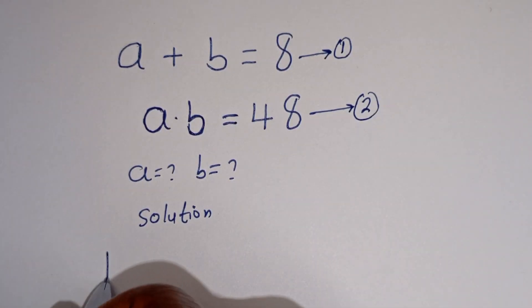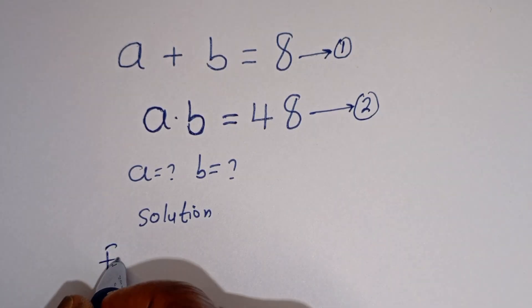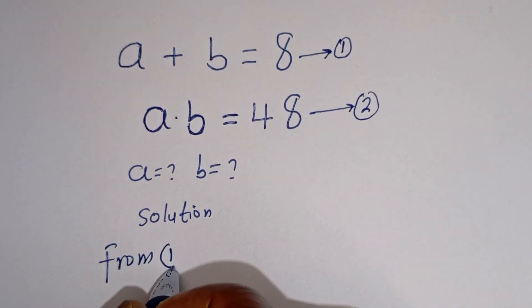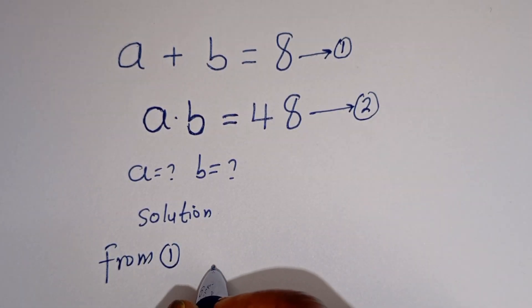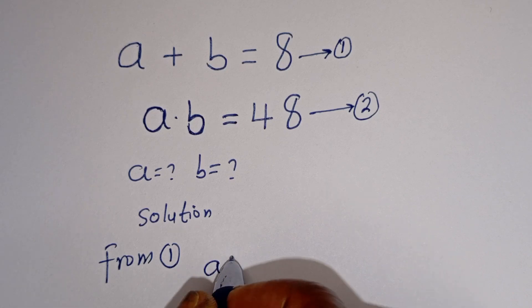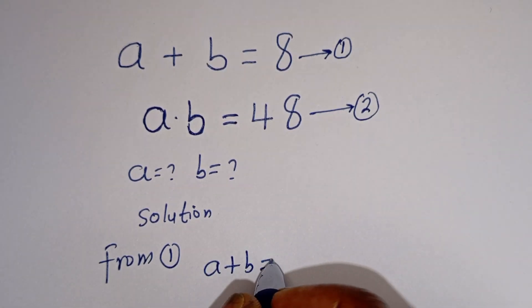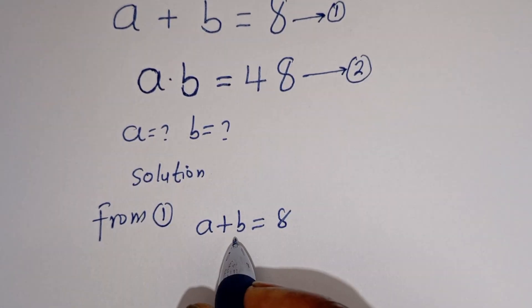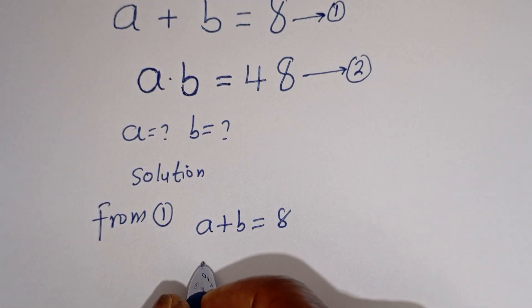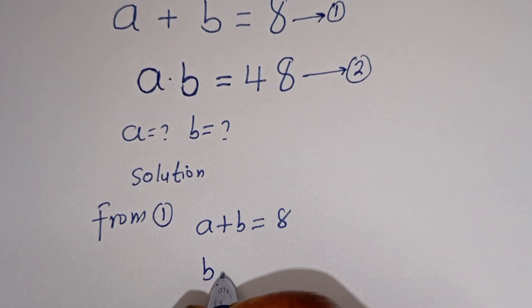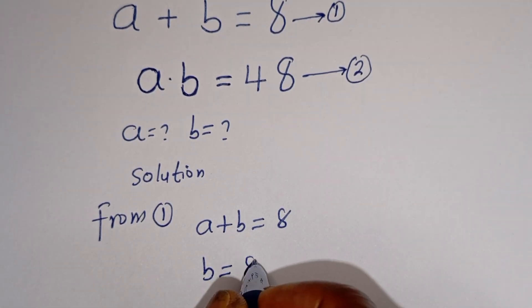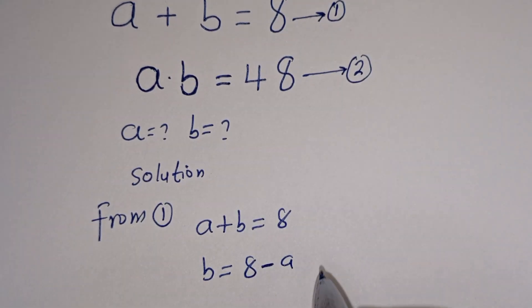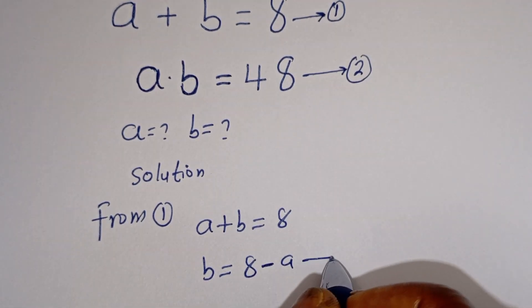From equation 1, A plus B is equal to 8. We can make B the subject of the formula: B is equal to 8 minus A. We can call this equation 3.